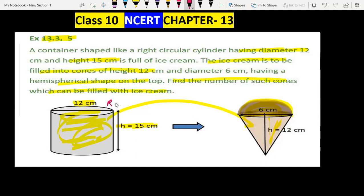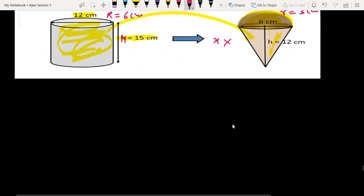The radius of the cylinder is 12 upon 2, which is 6 cm, and height is 15 cm. The cone's radius is 3 cm. Let the number of ice cream cones be x.